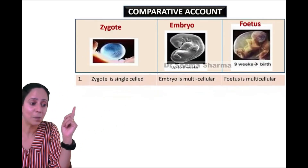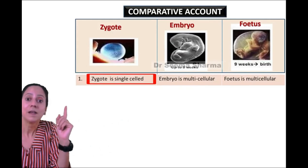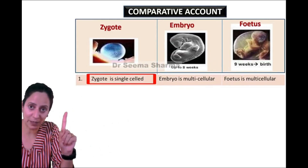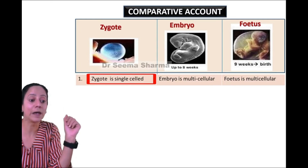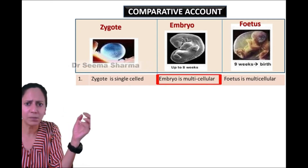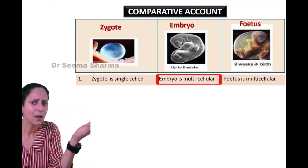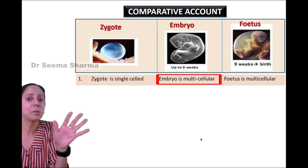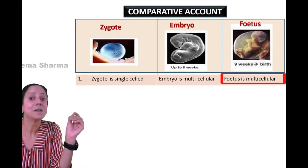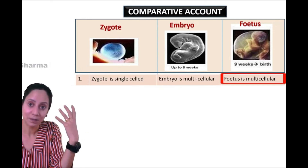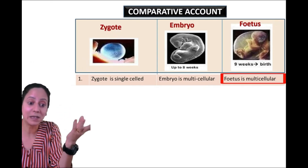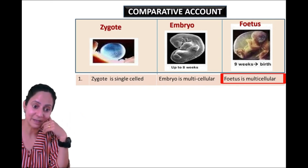Let's start with the number of cells. Zygote is single cell — it is made up of only one cell. Embryo is multicellular, meaning it has more than one cell, generally in the hundreds. In the case of fetus, the number of cells will be in the lakhs, billions, and finally in trillions.